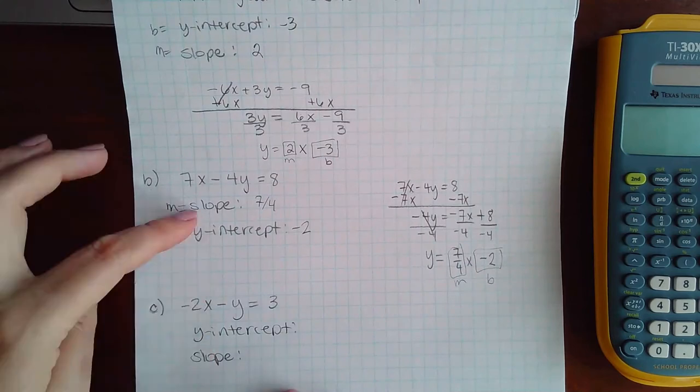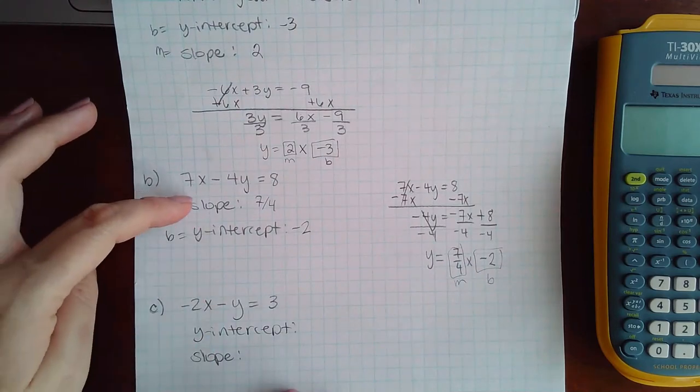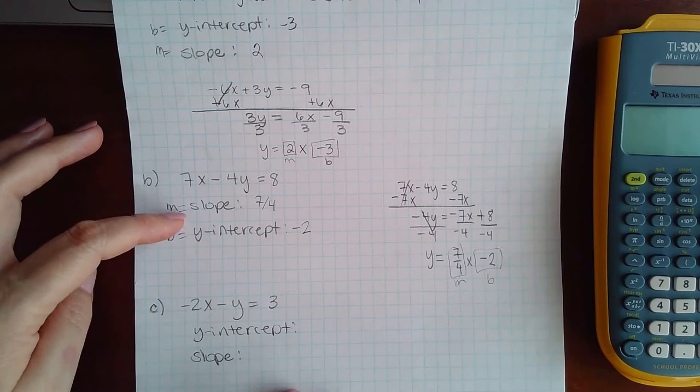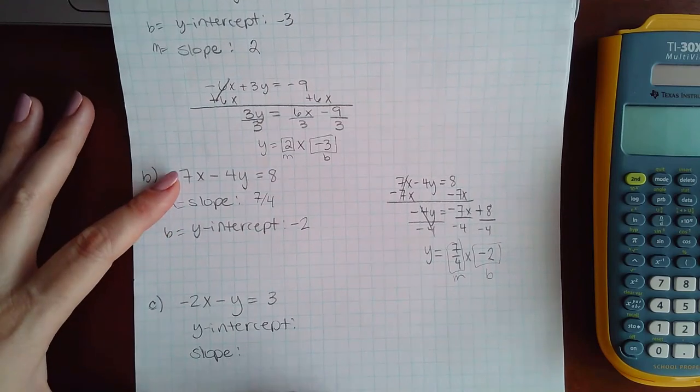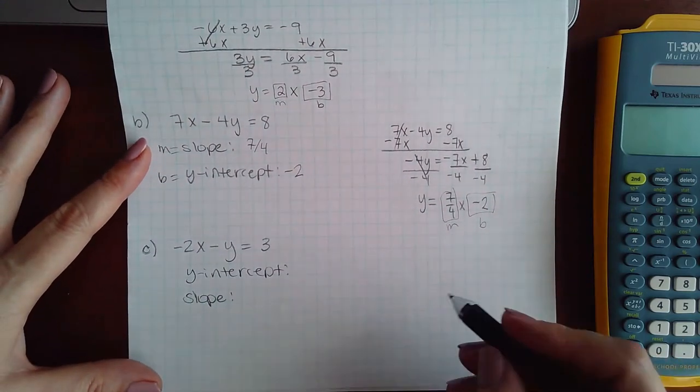So be careful because they do switch the labels on you. So sometimes they'll have the y-intercept first, sometimes they'll have the slope first. They'll pay very special attention to which number you're typing in where.